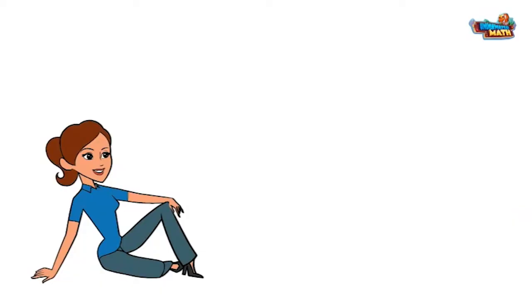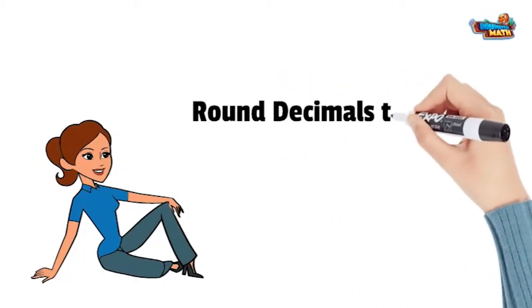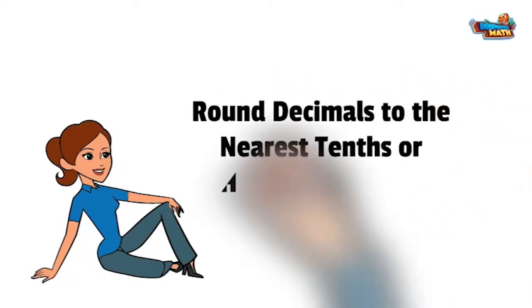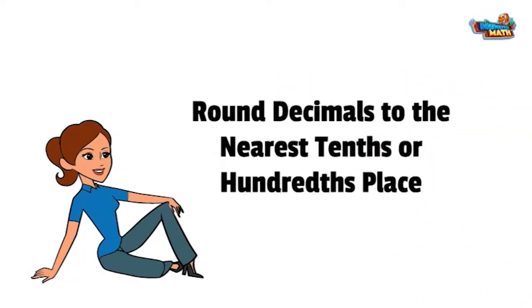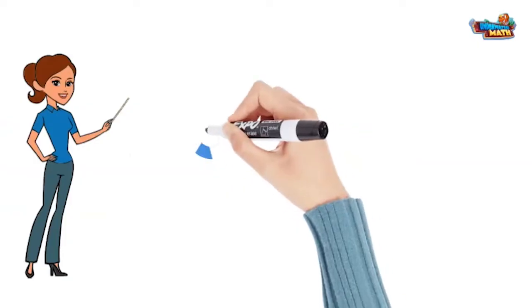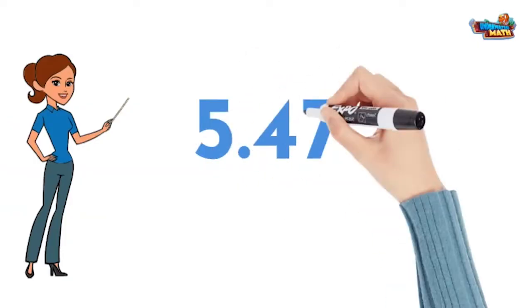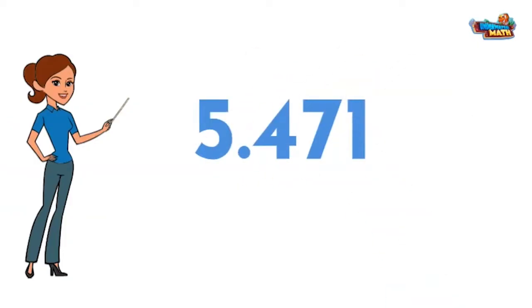Hey, today we will be discussing how to round decimals to the nearest tenth or hundredth place. Decimals represent a whole and part of a whole. The numbers before the decimal point show us the whole. The numbers after the decimal show us the part of a whole.